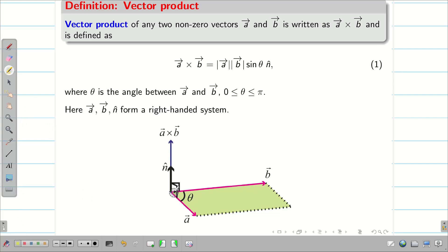We can see the diagrammatic representation. This is my a vector and this is my b vector. And n cap is going to be perpendicular to both a and b vectors.